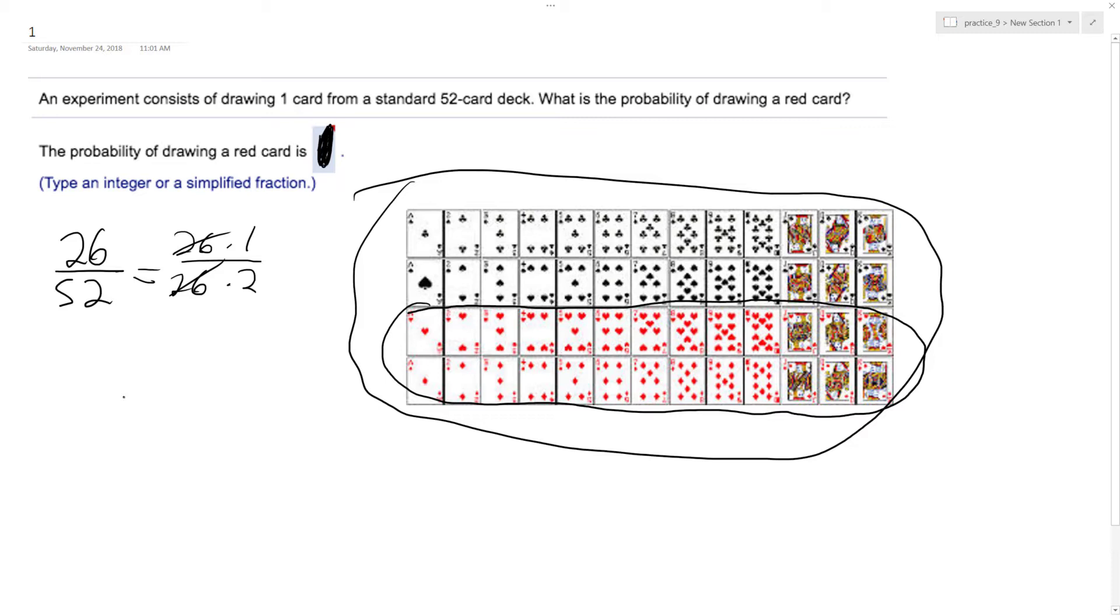26 cancels out, and you're left with the probability of selecting a red card is 1 over 2. And I can check right here. And that's correct.